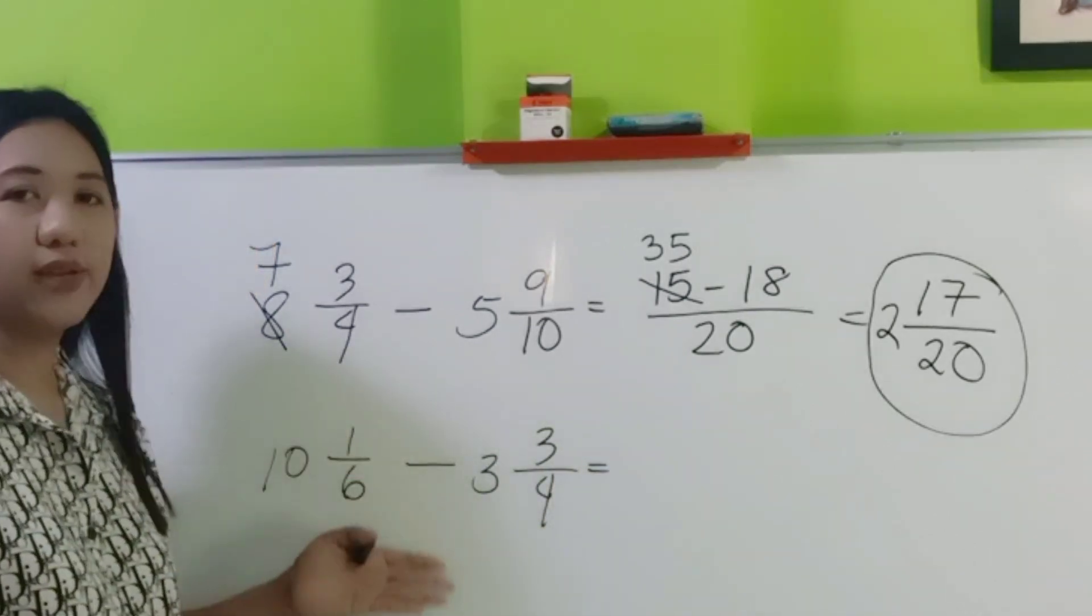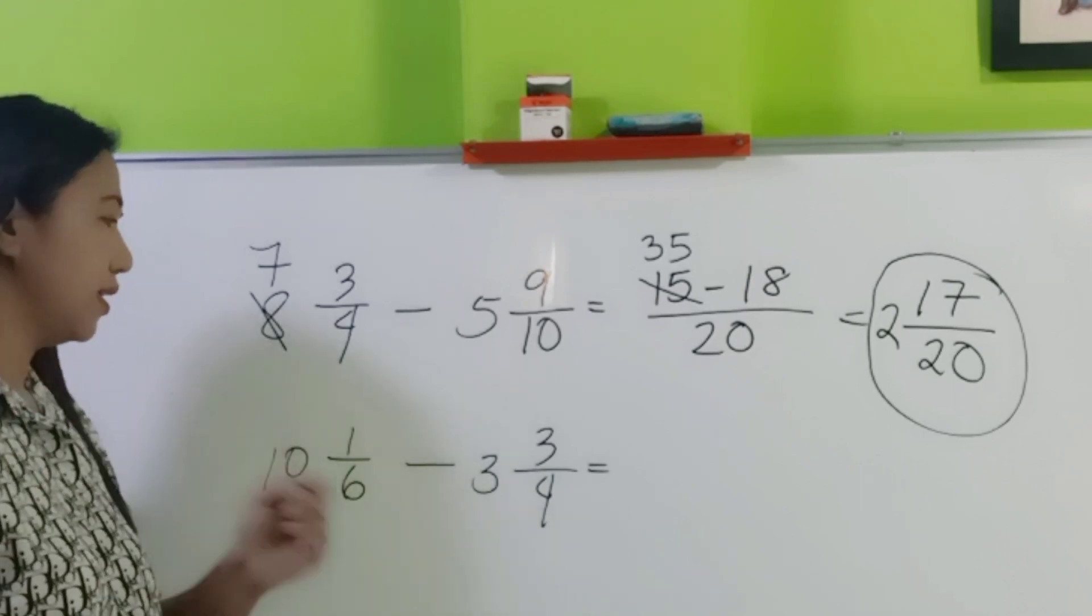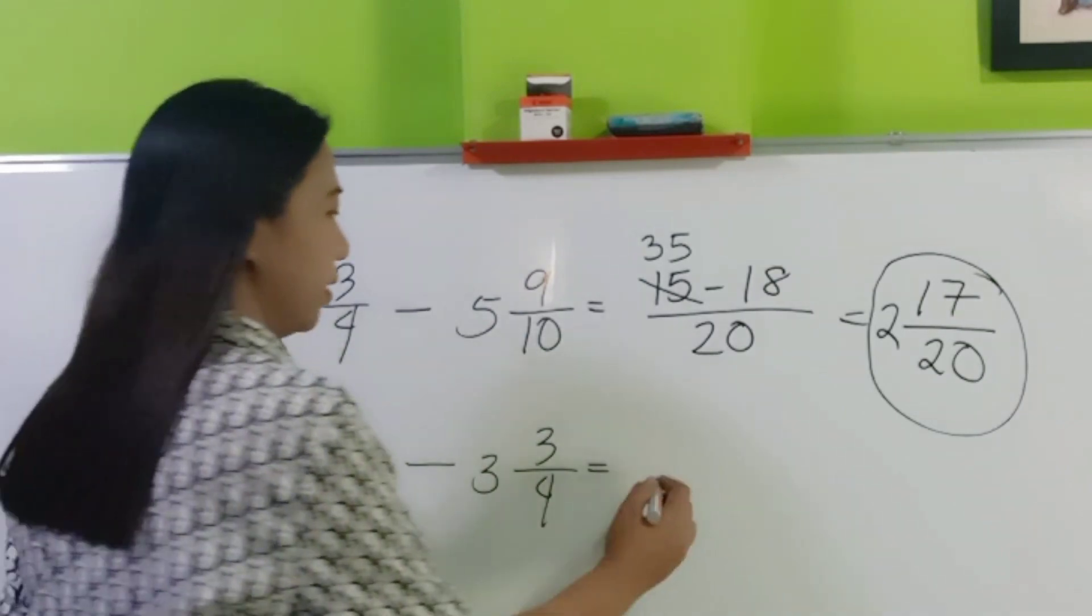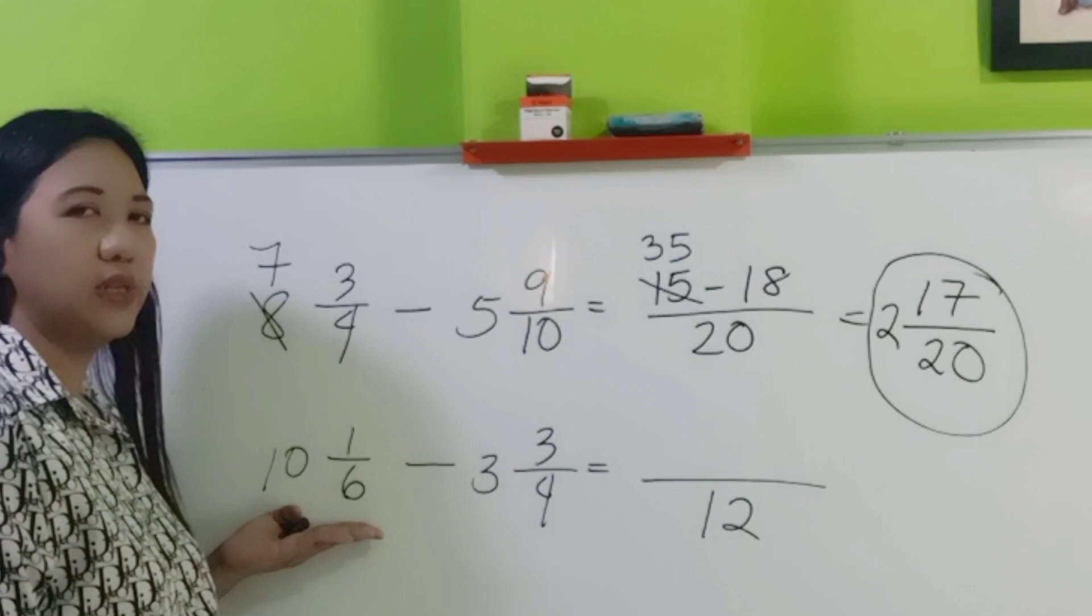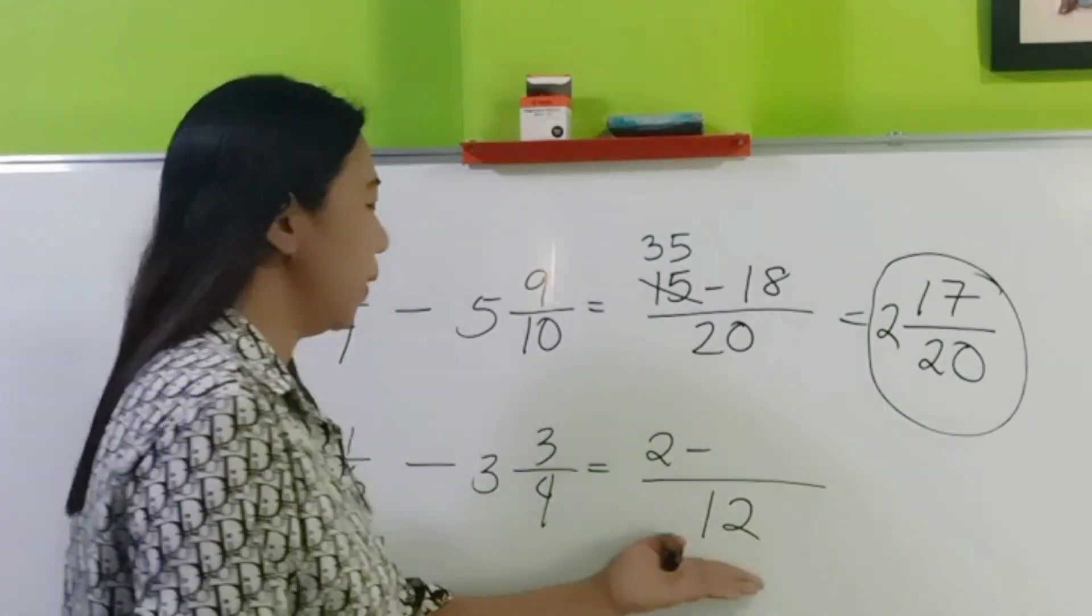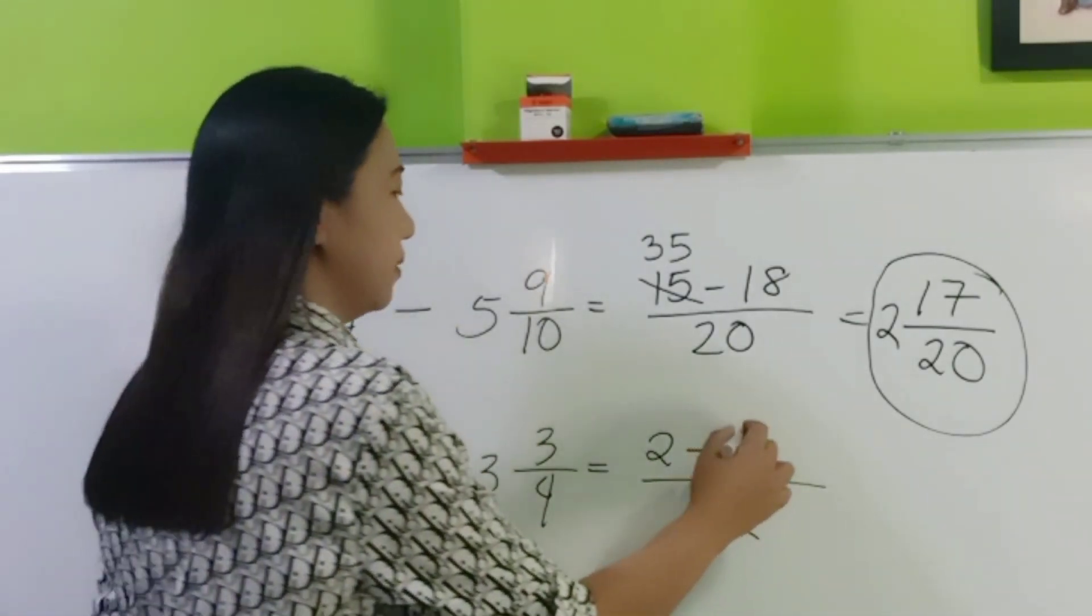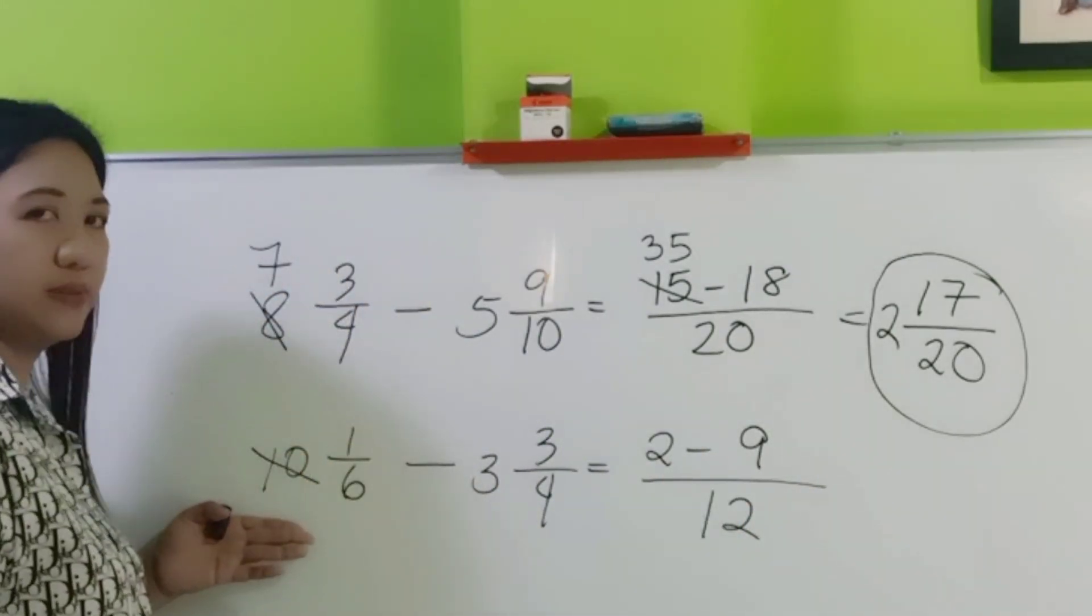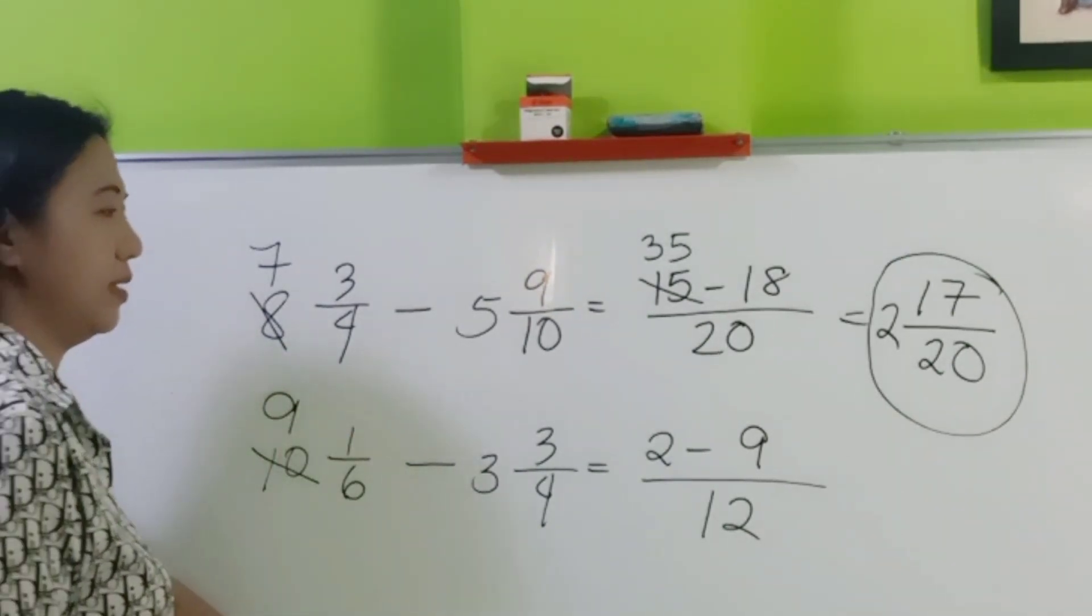10 and 1 sixth minus 3 and 3 fourths. First step, find the LCD. So the LCD of 6 and 4 is 12. Then 12 divided by 6, 2 times 1 is 2. Minus 12 divided by 4 is 3 times 3 is 9. Next, automatically, this becomes 9. Because you subtracted 1 from 10.